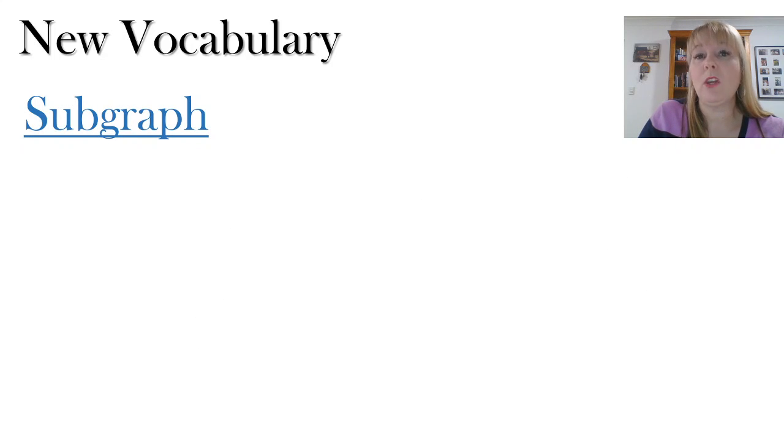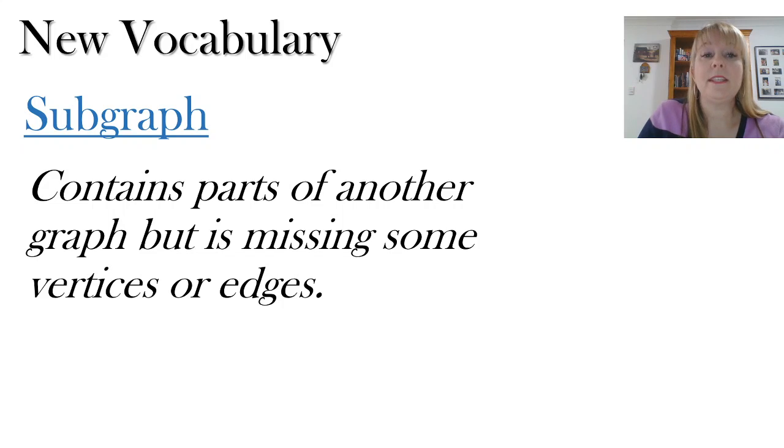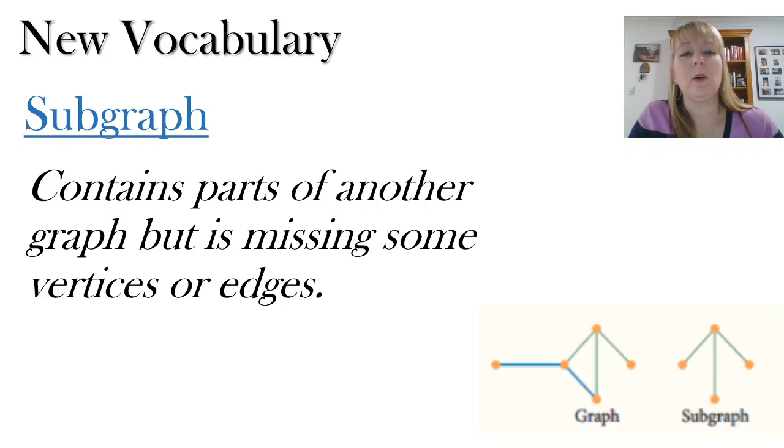We can also have something called a subgraph. And this is where there are parts of another graph, but it's missing some of the vertices or edges. And I know this is a bit of a blurry diagram. I apologize for that. But on the left, you can see a picture of a graph. And then part of that graph is missing for the subgraph, because that's just focusing on what's going on in those four points that are on that subgraph.